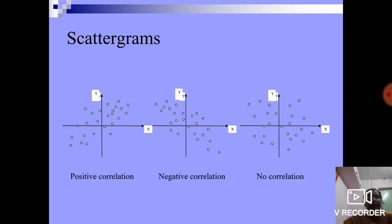We have the scatter diagrams like this. We have the positive correlation, next one is the negative correlation. Finally, the points are scattered around the graph, which is no correlation.